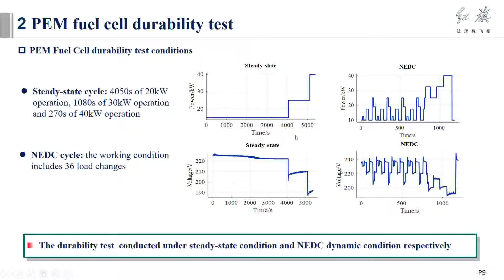Three groups of durability tests were carried out under two working conditions. The steady state working conditions include three power points and the NEDC dynamic working conditions include 36 power points. We compare the degradation trend of the system through two different operating conditions.